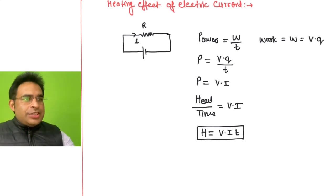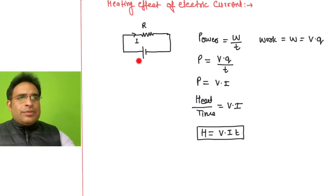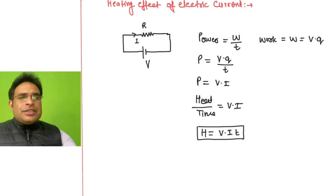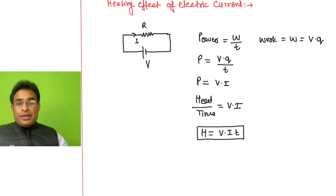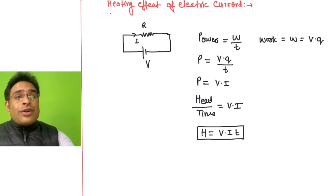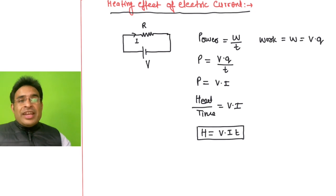Current is passing through a resistor — let's say this is a resistor and this is voltage V, battery voltage V. Now if current is passing through this resistor, because of this resistance there will be a loss of heat. Whenever there is loss of heat, there is loss of energy, and that loss of energy converts into heat. This is called the heating effect of electric current.